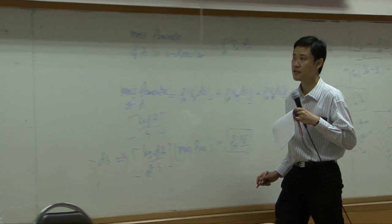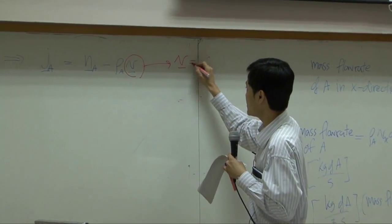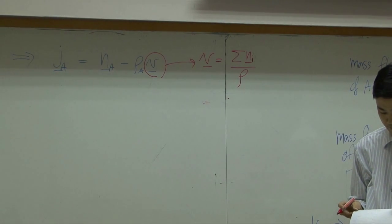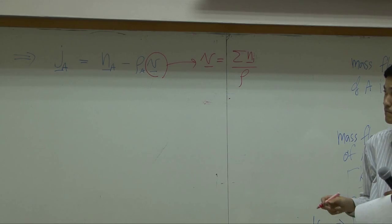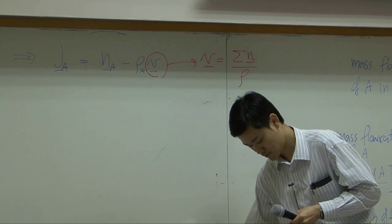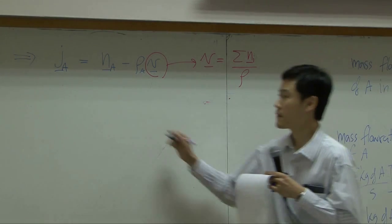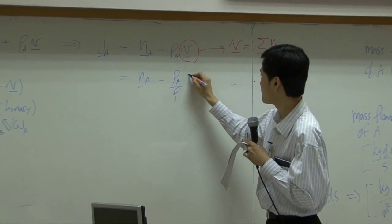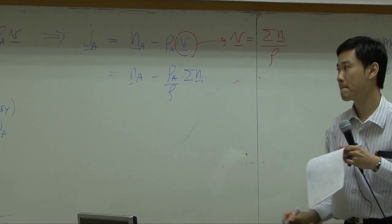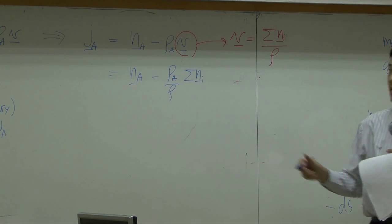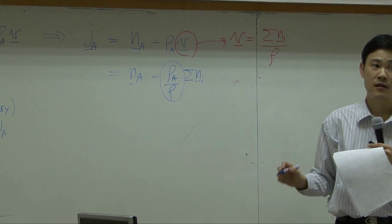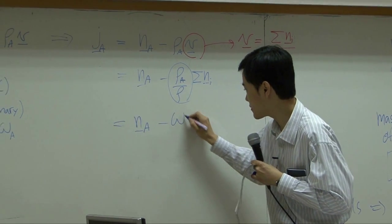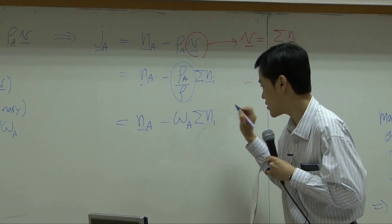So if I'm going to replace that in this equation, V is equal to sigma NI divided by rho. So you have NA minus rho A by rho summation of NI. And rho A over rho is mass fraction omega A. So it is equal to NA minus omega A summation of NI.